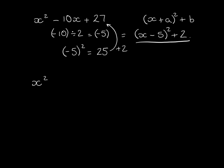Let's have a look at this one: x squared minus 16x plus 51. Now minus 16 divided by 2 is minus 8. Let's make sure we've got it written down: x plus a all squared plus b.